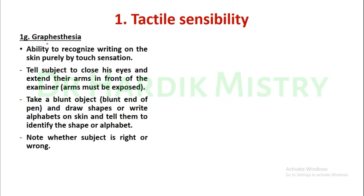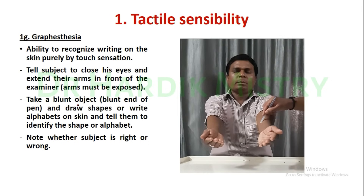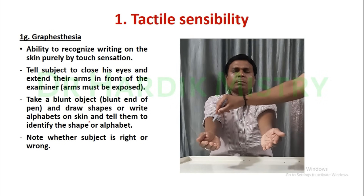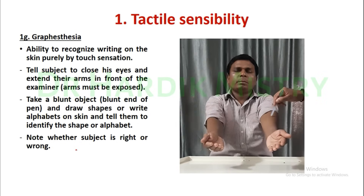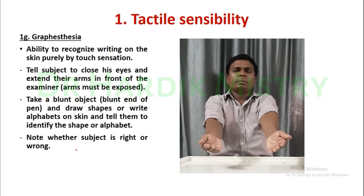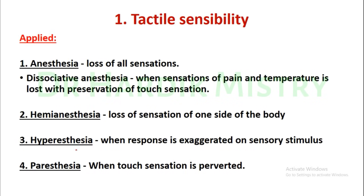Now the next is graphesthesia. What is graphesthesia? It is the ability to recognize writing on the skin purely by touch sensation. Tell the subject to close his eyes and extend their arms. Arms must be exposed. Take a blunt object, for example the blunt end of a pen, and draw shapes or write alphabets on the skin. Tell them to identify the shape or alphabet and note whether the subject is right or wrong.